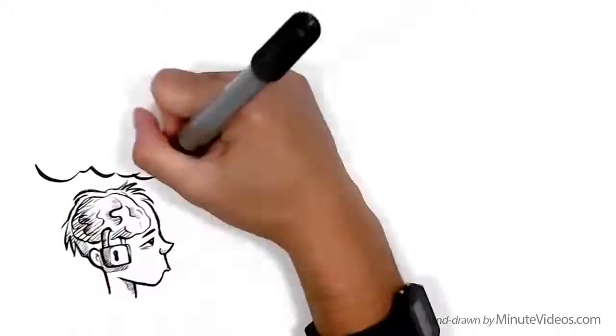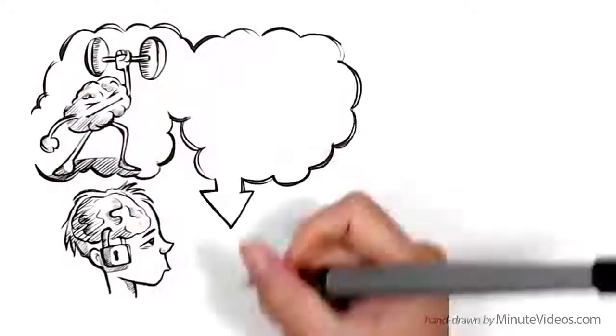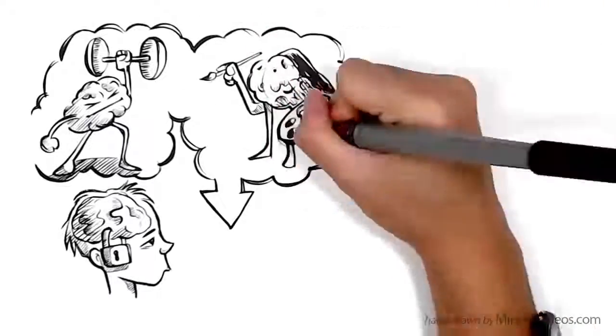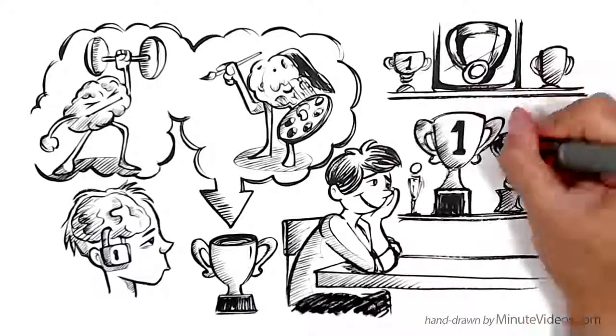People have a fixed mindset because they believe that basic qualities, like intelligence or talents, are fixed traits, and that these traits are responsible for success. They often like to document past achievements.